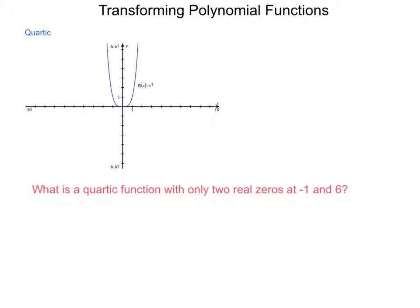but we can't always guarantee one solution. Just like a parabola, this could just move up in the area where it doesn't cross the x-axis and give us no real solutions. So, how do we build a function that has characteristics that we want? For instance, the question here, what is a quartic function with only two real zeros at negative 1 and 6?